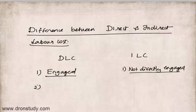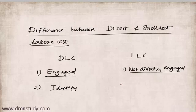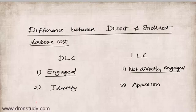The second difference is identification. Direct labor cost can be easily identified and allocated to a cost unit, whereas indirect labor cost cannot be identified with any particular cost unit or cost center. Instead, indirect labor cost has to be apportioned.